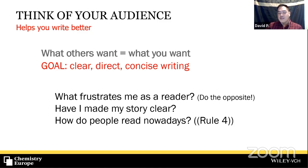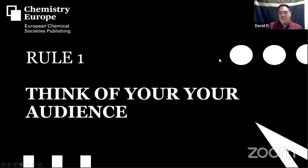We also need to have a good idea of how people read nowadays, which we'll go through when we discuss rule number four. So rule number one — think of your audience — can help you decide where you send your work, shape the content, and help you write better.